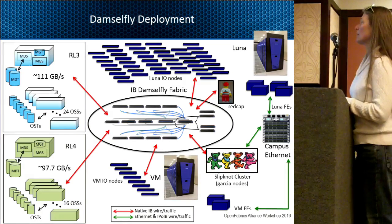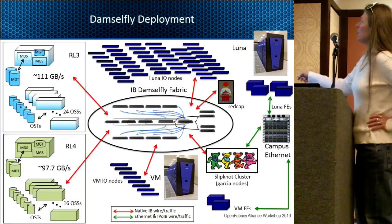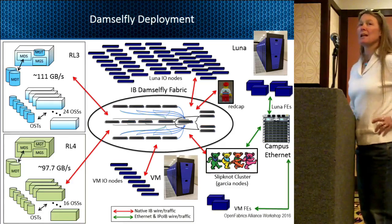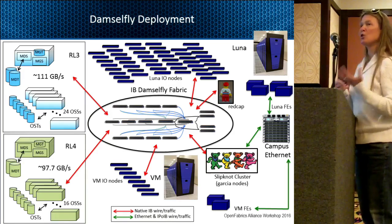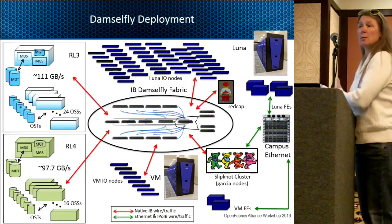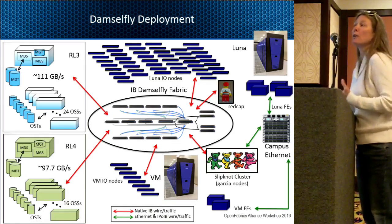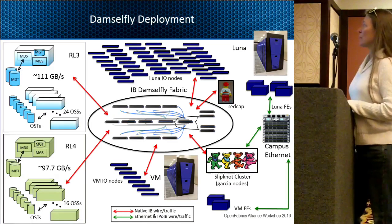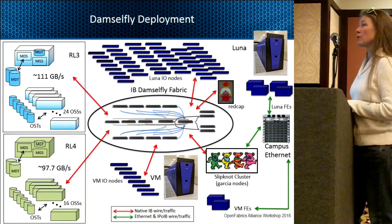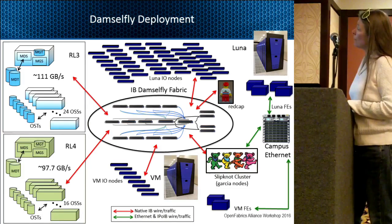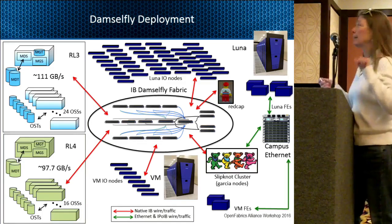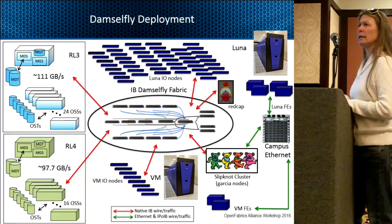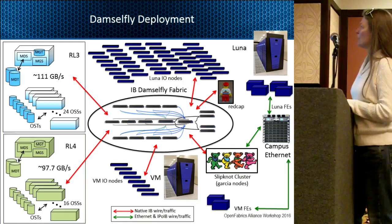Luna front-ends go through the campus to the Garcia nodes on Slipknot, which takes them into the backbone. REDCap is our FTA cluster — its job is to push data from a common Lustre file system to HPSS, Campaign, or some kind of archive. REDCap is directly tied into the Damselfly but is not FGR-aware, so it sits primarily on the ESLs — on the top half of the sandwich because that's one less hop. There are 30 FTAs, 15 on each ESL.